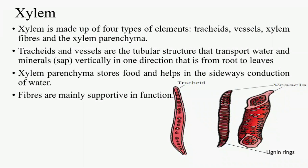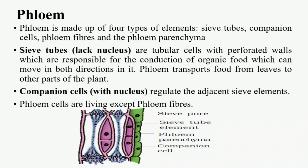Phloem is made up of four types of elements: sieve tubes, companion cells, phloem fiber, and phloem parenchyma. Sieve tubes lack a nucleus; they are tubular cells with perforated walls responsible for conduction of organic food synthesized by photosynthesis. Phloem transports food from leaves to different parts of the plant in multiple directions. Companion cells are present adjacent to sieve elements, have a nucleus, and regulate conduction in sieve elements. Phloem cells are mostly living, except phloem fiber, which is also known as phloem sclerenchyma.